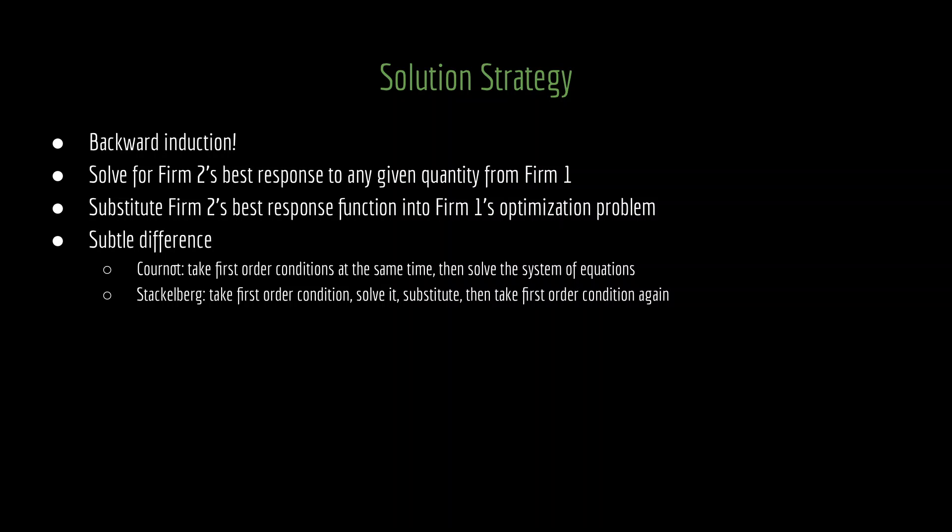Whereas with Cournot competition, we were working with Nash equilibrium because the firms were moving simultaneously. Here, because they're moving sequentially, we have subgame perfect equilibrium as our solution concept. I want to highlight a subtle difference here between the solution strategy for Stackelberg as compared to Cournot. Obviously, there is that big difference in terms of the solution concept being subgame perfection instead of Nash, but thinking about the actual logistics of doing these calculations: with Cournot, we take the first order conditions at the same time and then solve the system of equations to find the equilibrium. We take a first order condition for firm 1, take a first order condition for firm 2.